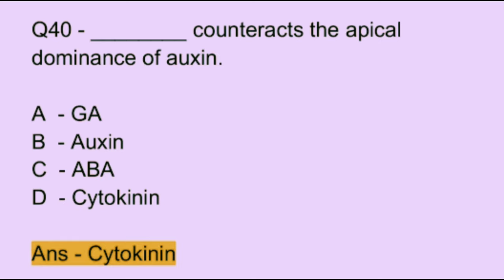Question number 40. Which of the following counteracts the apical dominance of auxin? Option A: GA. Option B: auxin. Option C: ABA. Option D: cytokinin. The correct answer is option D, which is cytokinin.